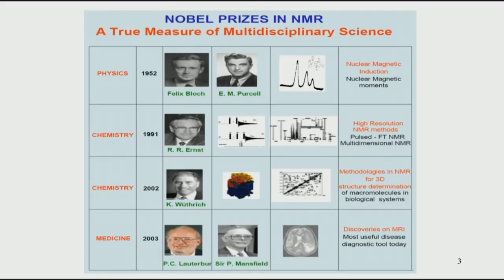Professor Kurt Wüthrich from ETH, Switzerland, was awarded the Nobel prize in 2002. His main contribution was developing new methodologies for structure determination of biomolecules. This is where NMR took off from being a tool of chemists to being a tool of structural biologists. It has seen phenomenal growth since then, and we will look at how NMR can be used for structure determination of small biomolecules such as peptides and proteins in this course.